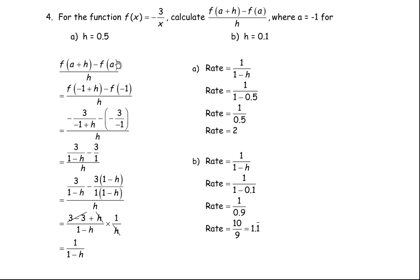For question number 4, we're given f(x) = negative 3 over x, and we're asked to calculate f(a+h) minus f(a) over h where a equals negative 1, then find the rate for two different h values. I'm putting negative 1 in place of a. So f(negative 1 plus h) means putting negative 1 plus h in place of x, giving negative 3 over (negative 1 plus h). And f(negative 1) is negative 3 over negative 1. There are a lot of negatives, so let's simplify by multiplying by negative 1 top and bottom.